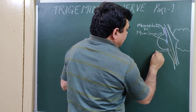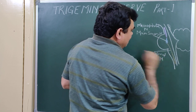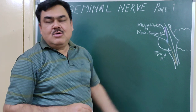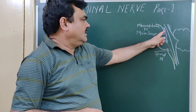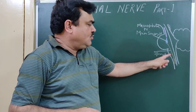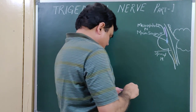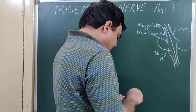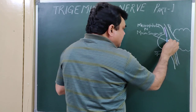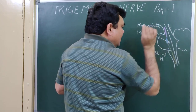So these three nuclei — mesencephalic, main sensory, and spinal nucleus of the Trigeminal — are the sensory nuclei. And another nucleus, that is the motor nucleus, lies medial to these sensory nuclei. This is the motor nucleus.